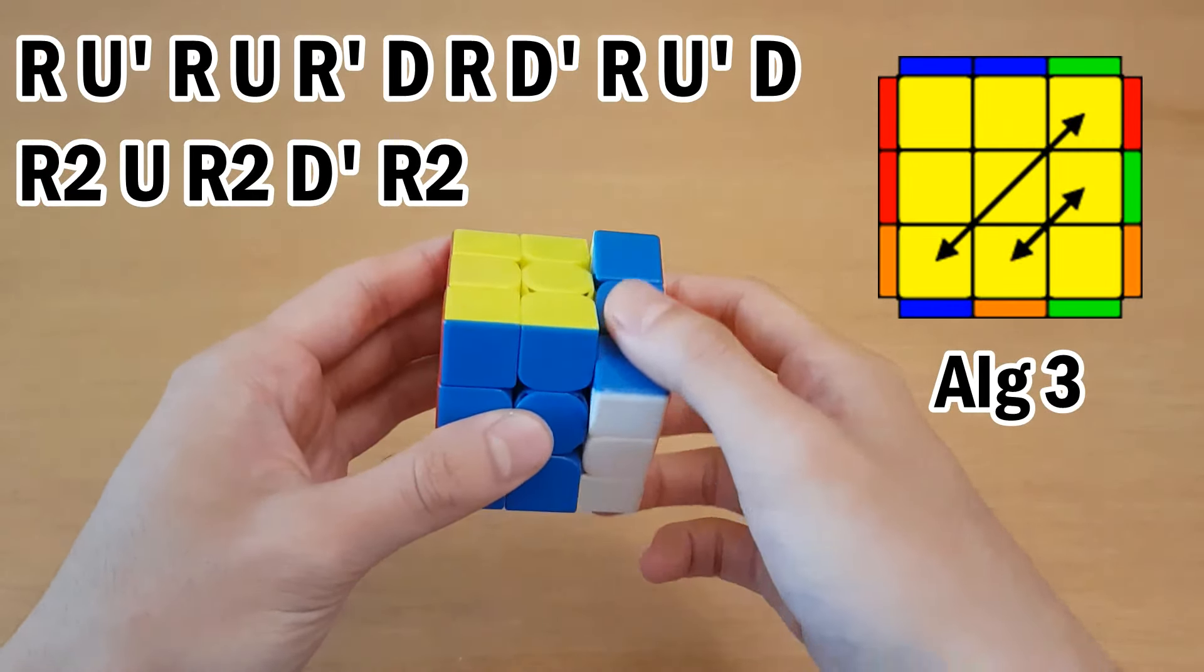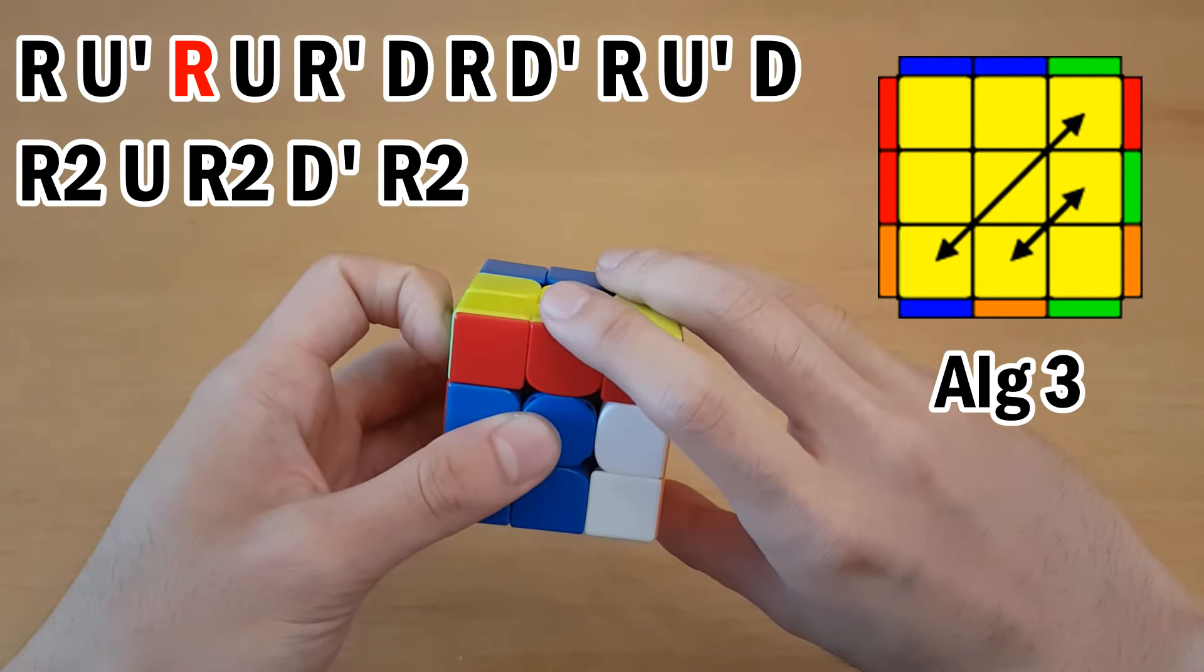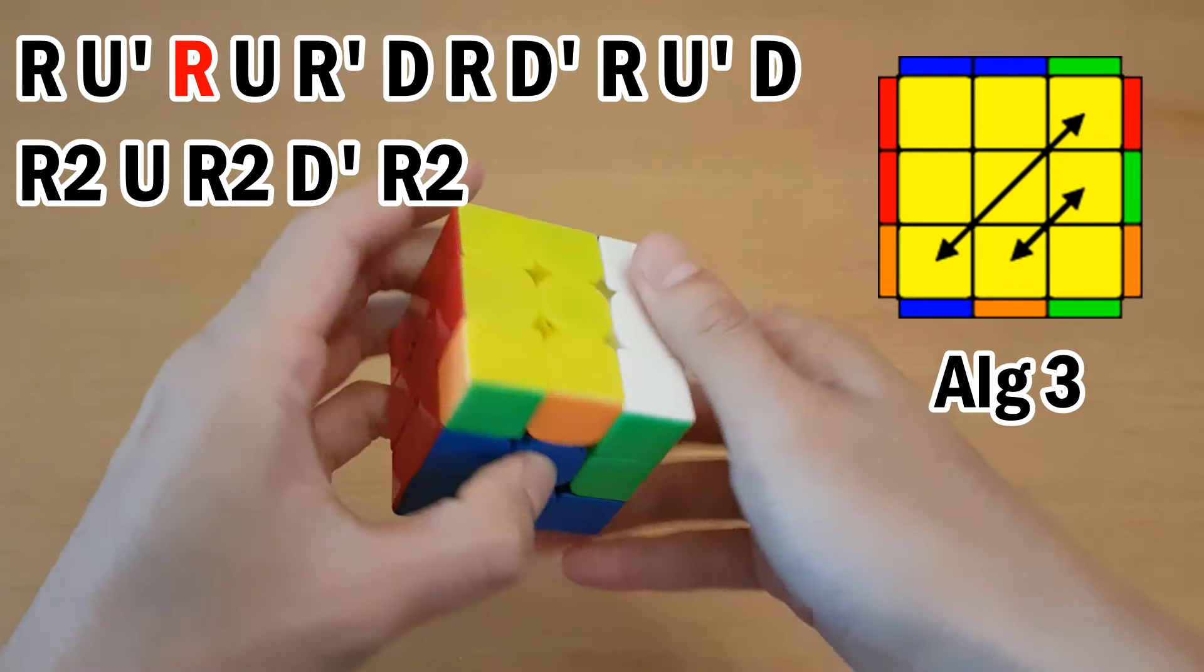For the one that I use now, it begins like this, which is no re-grip, and then one re-grip here, and no re-grips for the rest of the algorithm.